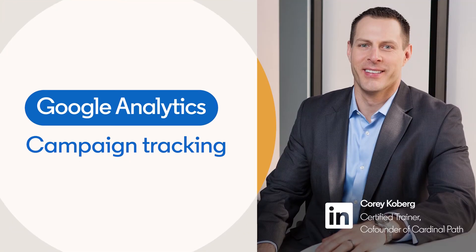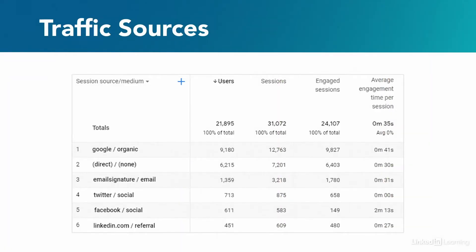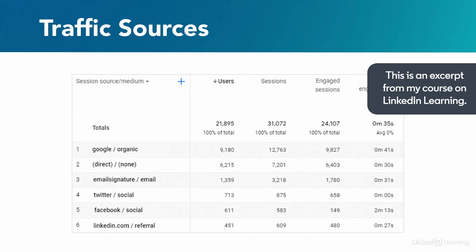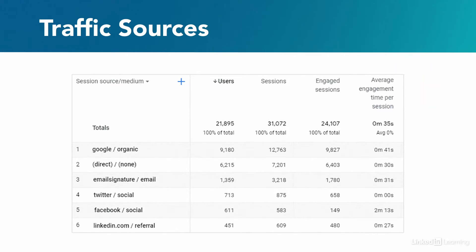Measuring how and where traffic is coming from to our site is one of the most important things we can measure in analytics. Coming down, we can see that Google is the highest source and the medium is organic search. We also have direct visits — that's where someone just types the URL right into the browser, so the source is direct and there is no medium.